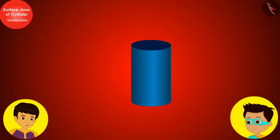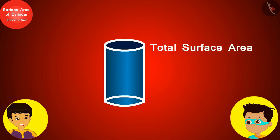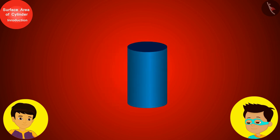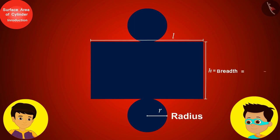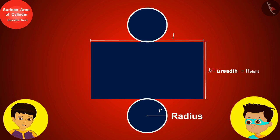Thomas, to find the size of the cloth needed to completely cover your box, you need to find the sum of the areas of all the faces of this cylindrical box. Imagine if we cut this cylinder and open it — it will look something like this. As you can see, the radius of the circular base is r, the length of the rectangle is l, and the breadth is h. Both the top and bottom circles of the cylinder are congruent, so the radius of the top circle will also be r.